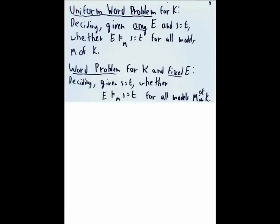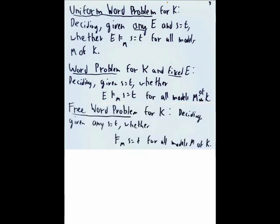The word problem for K and fixed E, so that's deciding given S equals T, whether E proves S equals T for all models M of K. And lastly, for the free word problem for K, we want to decide given any S equals T, whether we can prove S equals T for all models M of K.